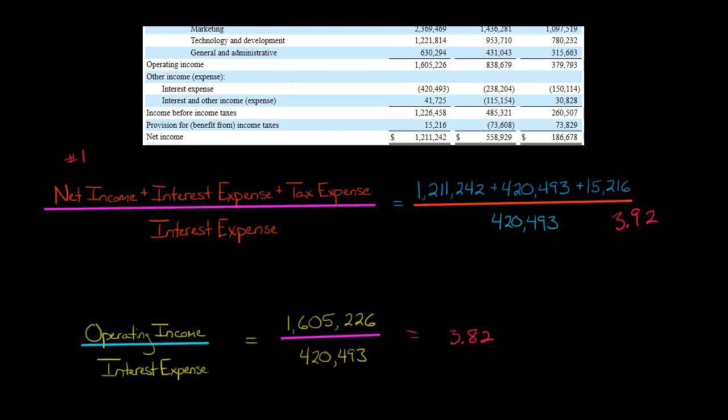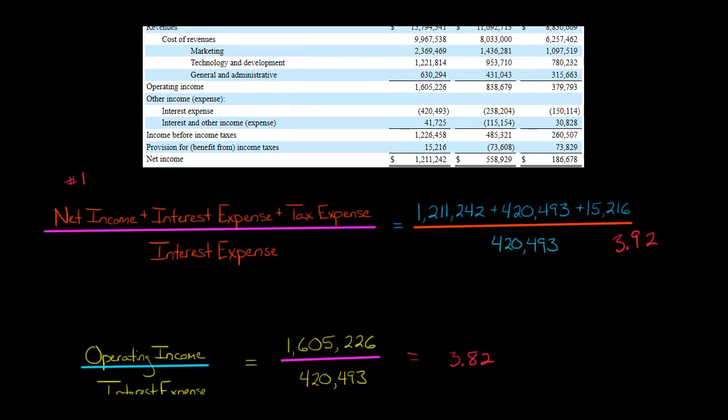And why is there a difference here? Notice the operating income does not include, not only does it not include interest expense or the income tax expense, but it also doesn't include this non-operating revenue. The company had some interest revenue, which is a non-operating item, so it's not including that. This isn't being factored in when we do option number two.